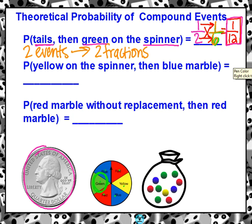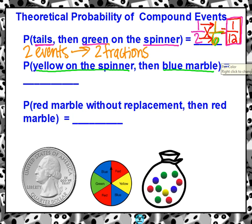The next one says the probability of yellow on the spinner, then a blue marble. We're still working with compound events. Think about how many events are happening — yellow on the spinner, then a blue marble. Hopefully you said two events. The first event would be spinning a yellow on the spinner. On the spinner, one of them is yellow out of the six. So that would be our first fraction.